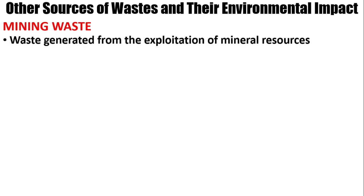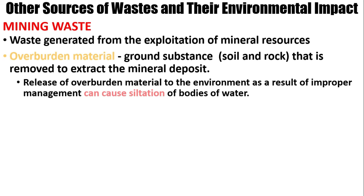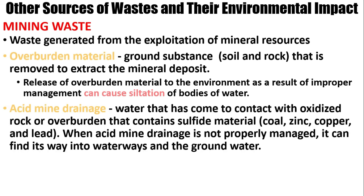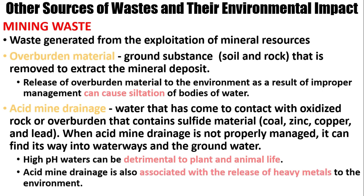Next is mining waste — waste generated from the exploitation of mineral resources. There are two kinds. The first is overburden material: ground substances that are removed to extract the mineral deposit. Improper management of overburden material can cause siltation of bodies of water. The second is acid mine drainage, discussed earlier — water that has come into contact with oxidized rock or overburden containing sulfide materials such as coal, zinc, copper, and lead. When not properly managed, acid mine drainage can find its way into waterways and groundwater. A high acidity level can be detrimental to plant and animal life, and acid mine drainage is also associated with the release of heavy metals into the environment.